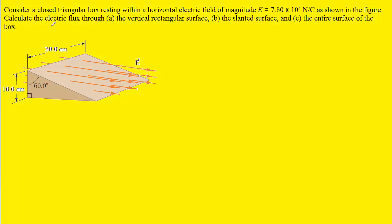In part A, in order to calculate the electric flux through the vertical rectangular surface, we want to look at the equation that allows us to calculate electric flux through a surface. We can see that the electric flux is equal to an integral of a dot product between the electric field vector and the dA vector. The circle drawn around the integral simply indicates that the integration is to be taken over the entire surface, so in part A we're integrating across the entire rectangular surface.